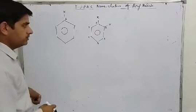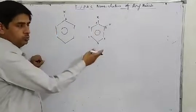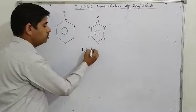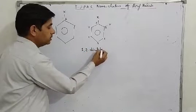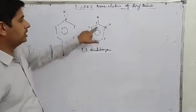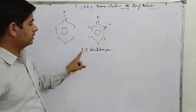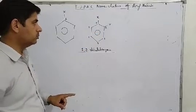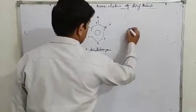When halogens are at positions 1 and 2, you write 1,2-dihalogenobenzene. I have mentioned that halogens are at the first and second positions, so you say 1,2-dihalogenobenzene.